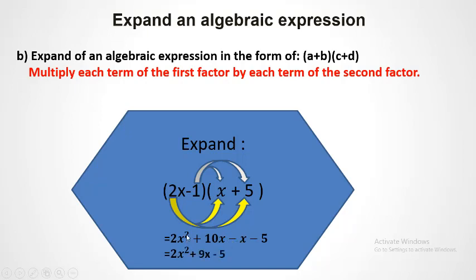Minus 1 times plus 5 is minus 5. We have similar terms: plus 10x and minus x. We can reduce the similar terms, giving 2x squared plus 9x minus 5, since plus 10 minus 1 is 9.